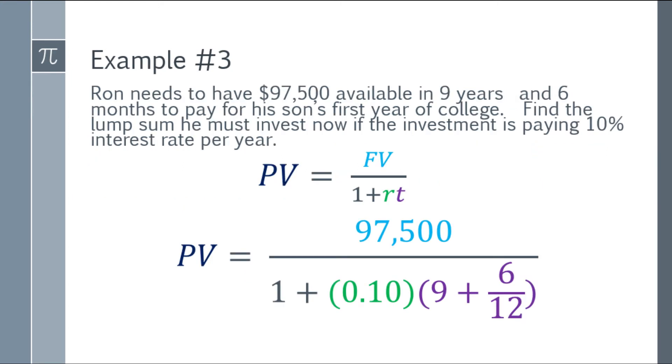Let's use the formula and substitute the given. So present value is equal to $97,500 over the quantity 1 plus 0.10 times 9 plus 6 over 12. Where did the 6 over 12 come from? Remember, the time in interest is always dependent on the year. And in the given, you have 6 months. So there are 12 months in a year. So if there's a fraction, that will be 6 over 12. So 9 years, so it's 9 plus 6 over 12.